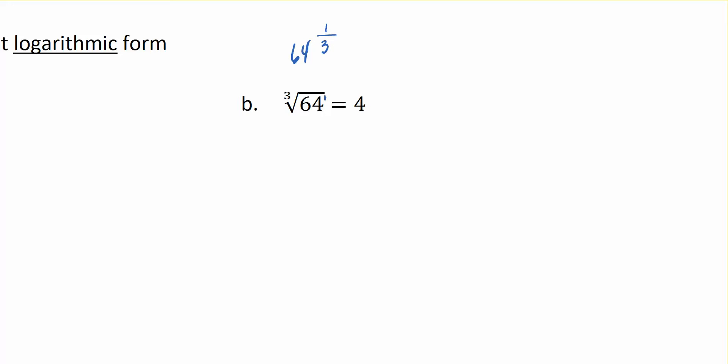So we have to change all radicals into rational form. Now, so that's my next step. So I have 64 to the 1/3 is equal to 4. It's this exponential form that I want to move into the log form. So what is my base? My base is 64. So I write log base 64 to the argument of 4 is equal to the power 1/3. And that's the log form.